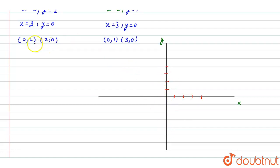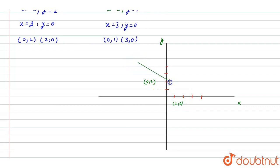We plot the point (0, 2) and the point (2, 0) on the graph. We then draw a line passing through these two points. This is the line for equation 1.